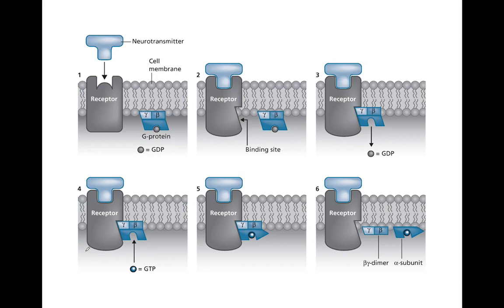G protein coupled receptors are membrane bound proteins situated on the outer surface of the cell membrane. This is the G protein coupled receptor. The G proteins themselves are membrane bound and situated on the inner surface of the cell membrane. They're made up of three subunits: the alpha, the beta, and the gamma subunits. The alpha subunit is able to bind to guanine nucleotides — GDP and GTP.